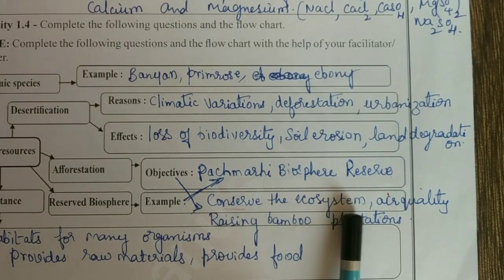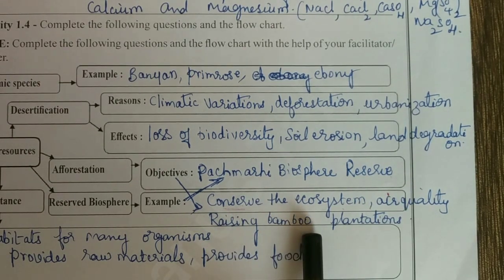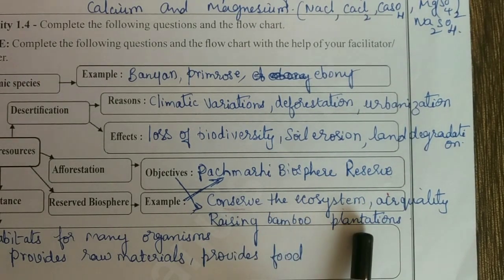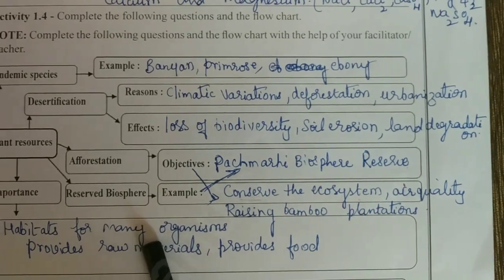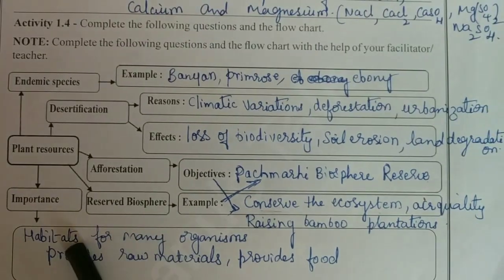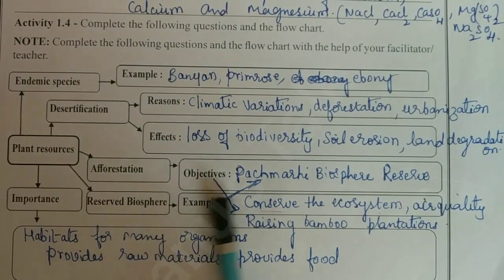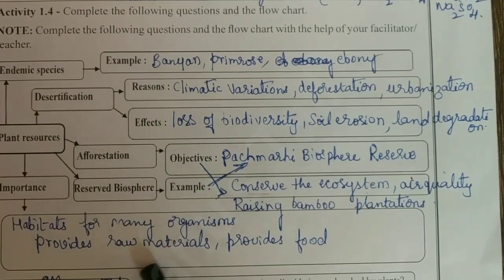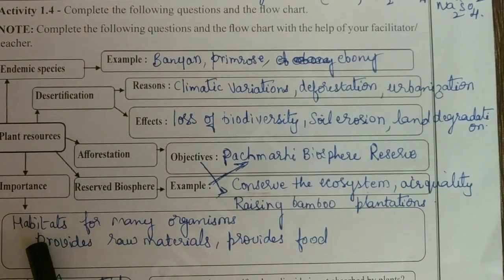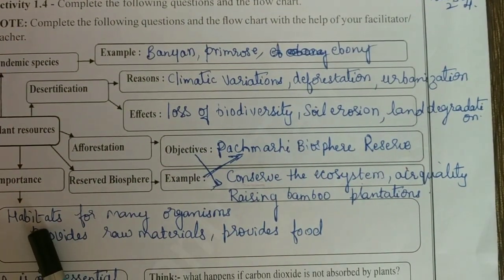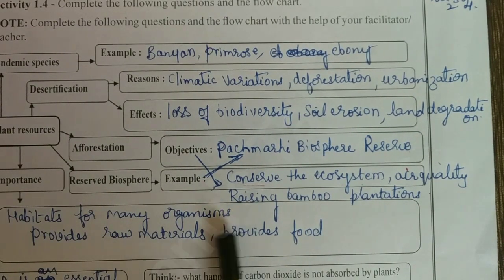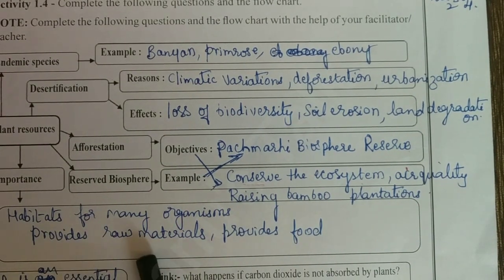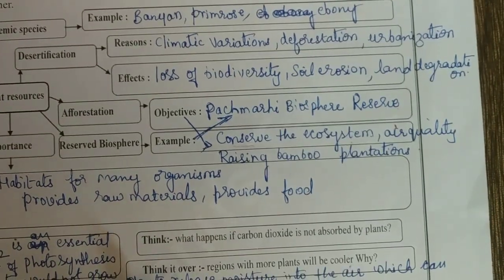Afforestation objectives: conserve the ecosystem, improve air quality, raising bamboo plantations. This is about the reserved biosphere — Pachmari Biosphere Reserve. Importance of plant resources: habitats for many organisms, provides raw materials, and provides food.